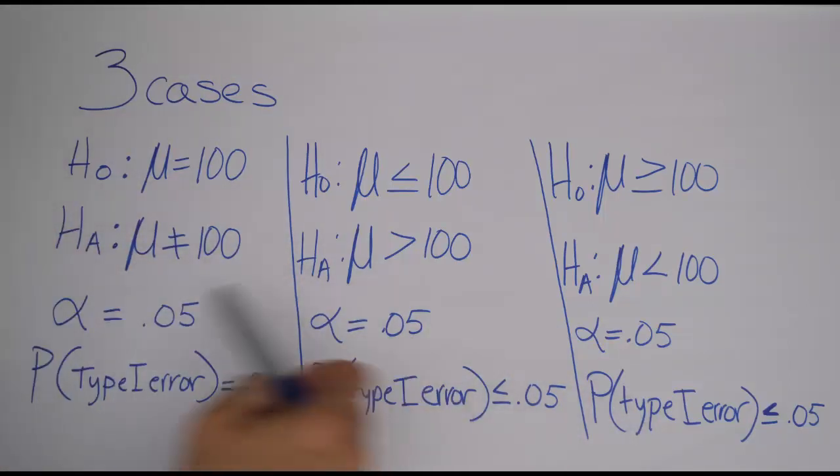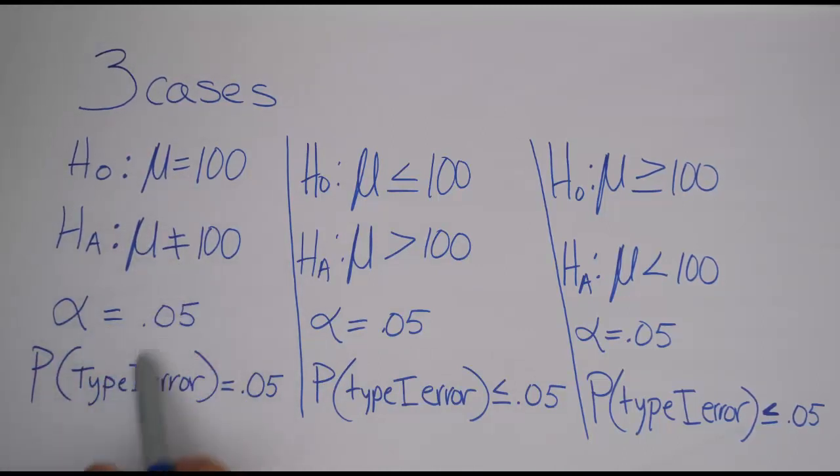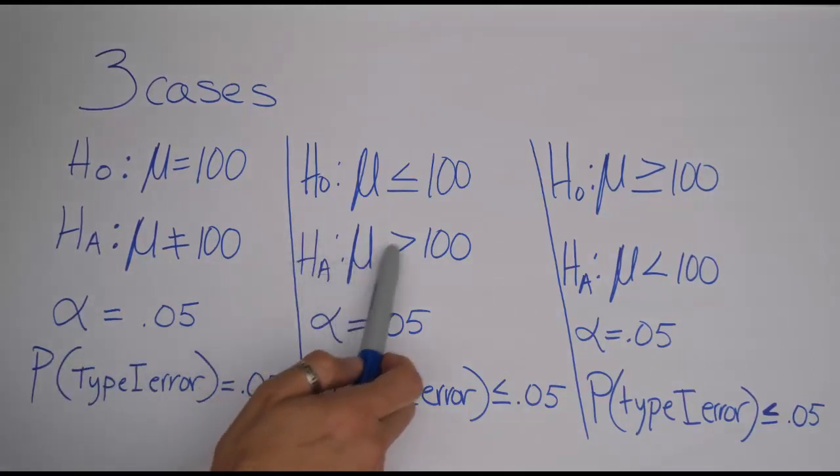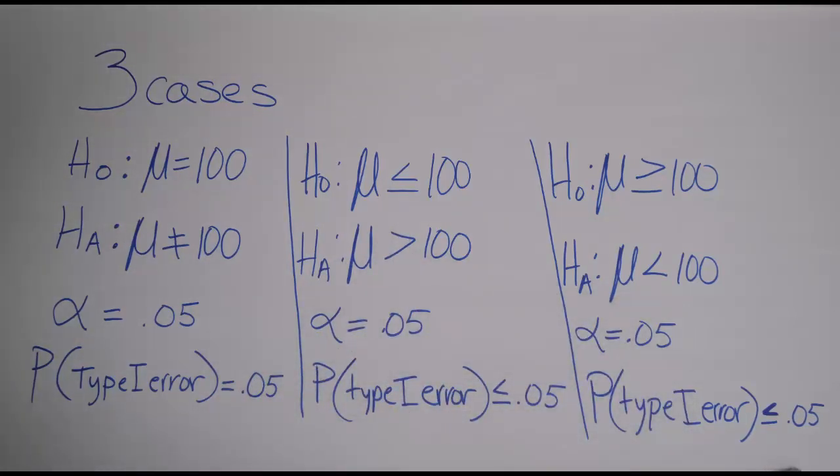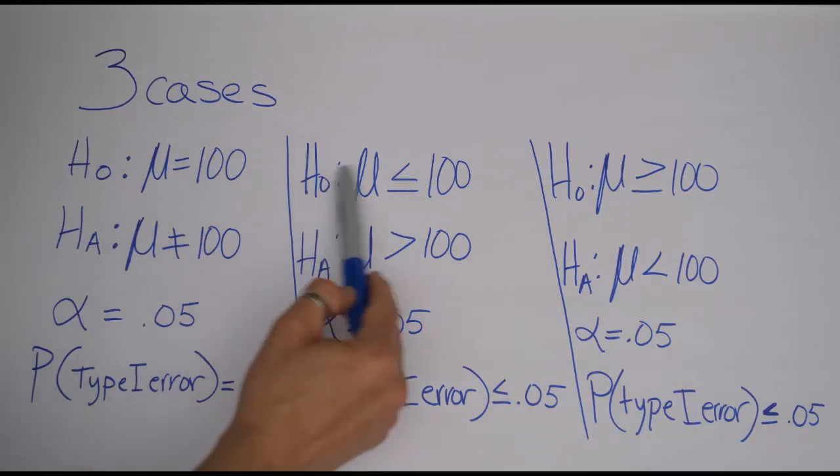So anyways, with that in mind, it really boils down to two cases. Either you see for HA not equal to, in which case you say the probability of a type 1 error is 5% or alpha, or you have the idea that your HA uses either greater than or less than, and then you would say probability of a type 1 error is at most 5%. Again, this is all based on the idea that I allow my null hypothesis to be one of three cases.